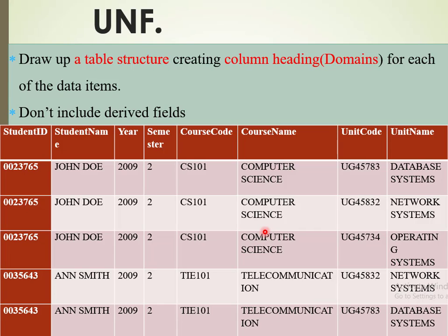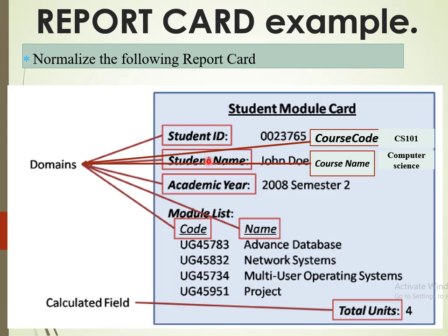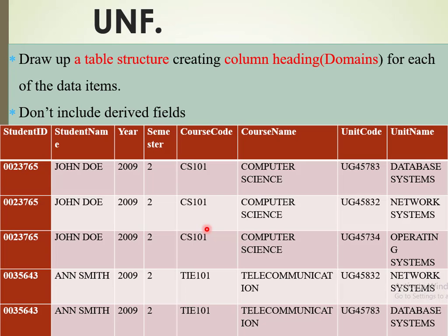Once you have identified the domains, or the column headings, we create a structured frame — also called a relation — in a given manner, ensuring that each of the domain names forms a particular field. In this case you can see student ID, student name, academic year, course code, course name, module code, and module name appearing as the fields of our relation.